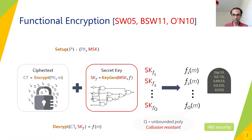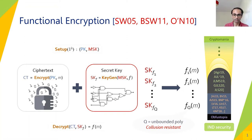For building collusion resistant FE schemes, people focus on the weaker indistinguishability-based setting where there is a recent line of work building such FE schemes in an attempt to construct indistinguishability obfuscation from standard assumptions, thereby merging the two lands of Cryptomania and Obfustopia. However, these constructions are complex and rely on a set of mixed assumptions, some of which are not post-quantum secure. Hence, it remains meaningful and interesting to consider constructions of FE under plausible post-quantum assumptions even in a weaker security setting.